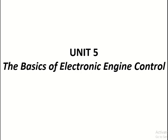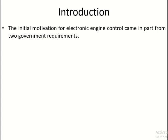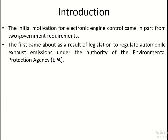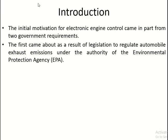Let's start with Unit 5, which is about the basics of electronic engine control. The initial motivation for electronic engine control came in part from two government requirements. The first came about as the result of legislation to regulate automobile exhaust emissions under the authority of the Environmental Protection Agency.